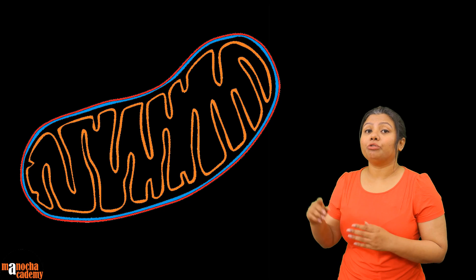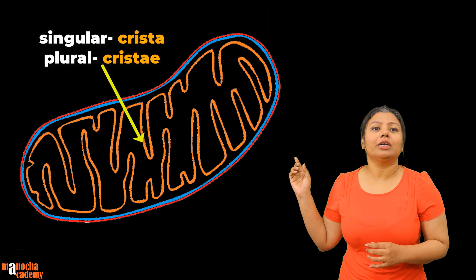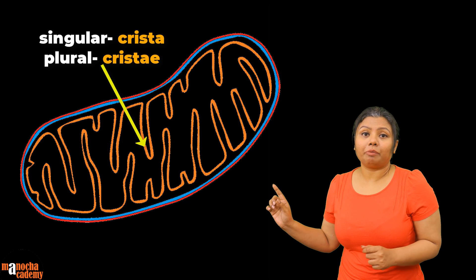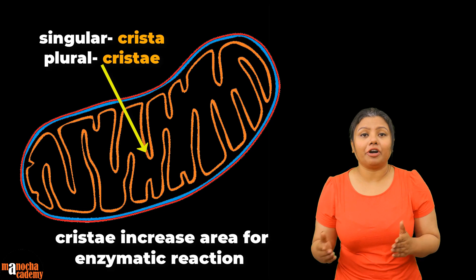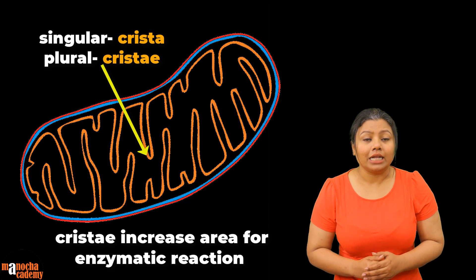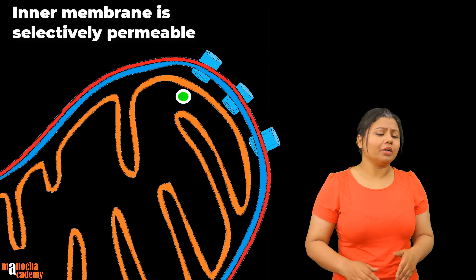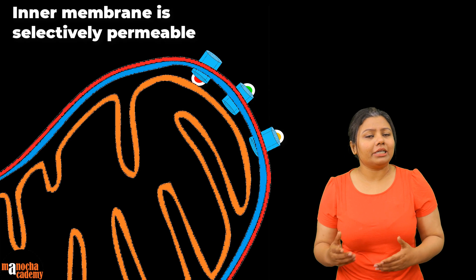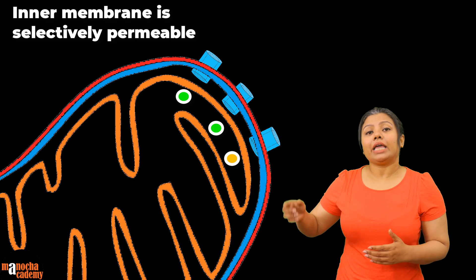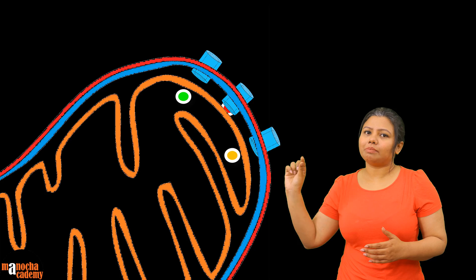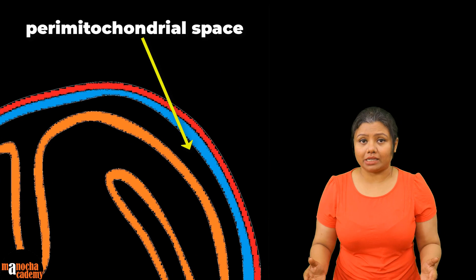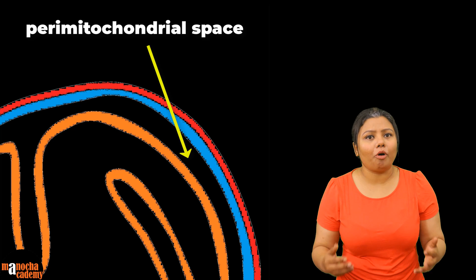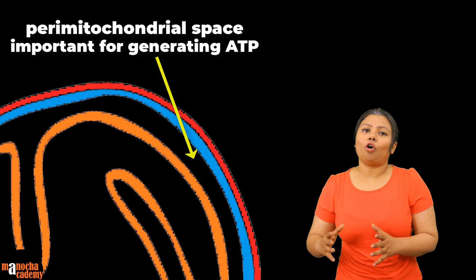The inner membrane of the mitochondria is thrown into finger-like projections called Cristae. The finger-like projections called Cristae increase the surface area for enzymatic reactions. The inner membrane is selectively permeable, more close to the permeability of the cell membrane. In between the two membranes is a small space known as the perimitochondrial space.